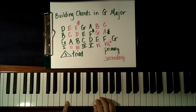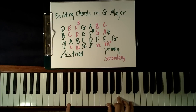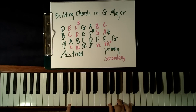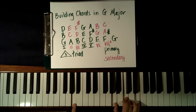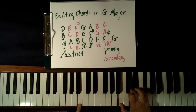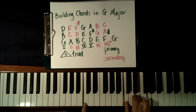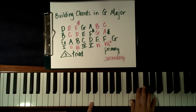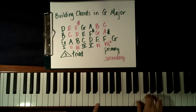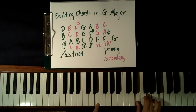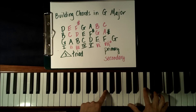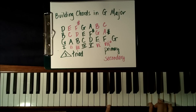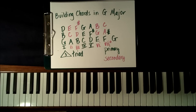Let's just play through them, beginning with the root in the left hand and the root position triad in the right hand. The I chord: G, B, and D. The II chord: A, C, and E. The III chord: B, D, and F sharp. The IV chord: C, E, and G. The V chord: D, F sharp, and A. The VI chord: E, G, and B. And the VII chord: F sharp diminished. So these are all of the chords in the key of G major. I'll do another video on how to play chords in different inversions.